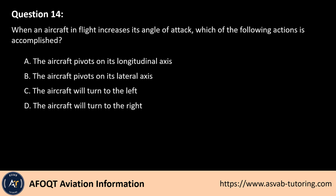Question 14. When an aircraft in flight increases its angle of attack, which of the following actions is accomplished? A. The aircraft pivots on its longitudinal axis. B. The aircraft pivots on its lateral axis. C. The aircraft will turn to the left. D. The aircraft will turn to the right.